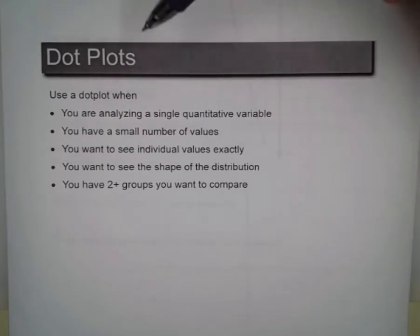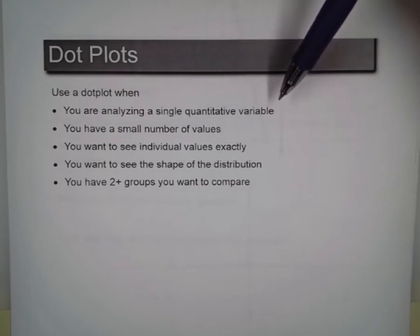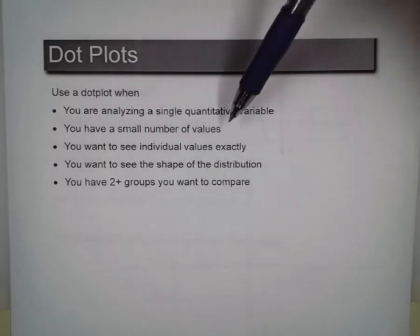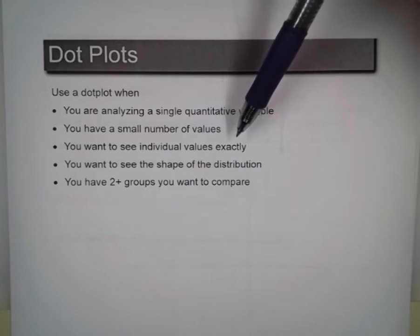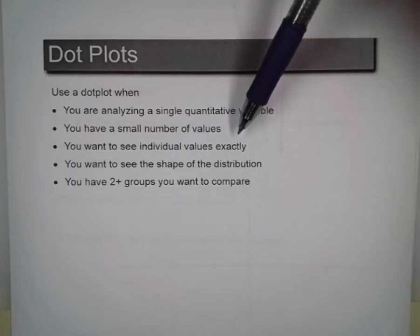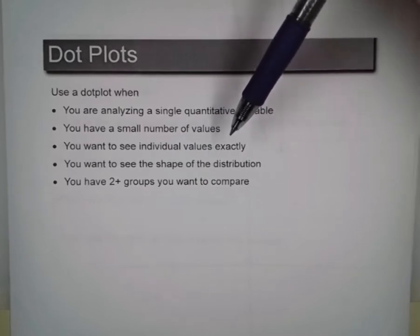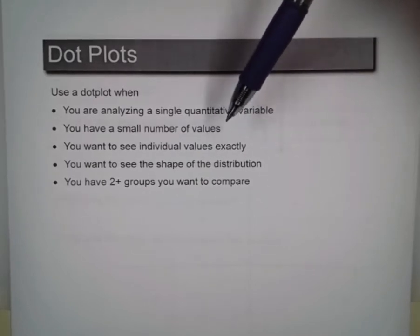You want to use a dot plot when you're analyzing a single quantitative variable and you have a small number of values. That's kind of relative. For some people that means 5, for some people it means 20. Twenty to thirty is about the most you're going to have with a dot plot, especially if you're drawing it by hand. There are apps online where you can draw a dot plot on a computer, and in that case you don't care about the number.